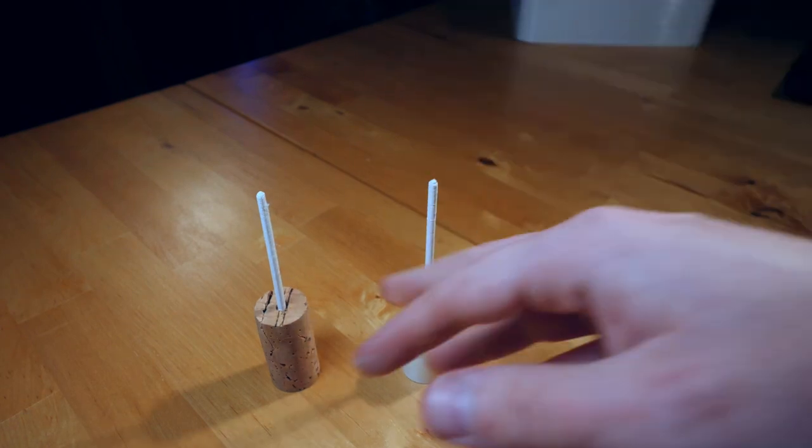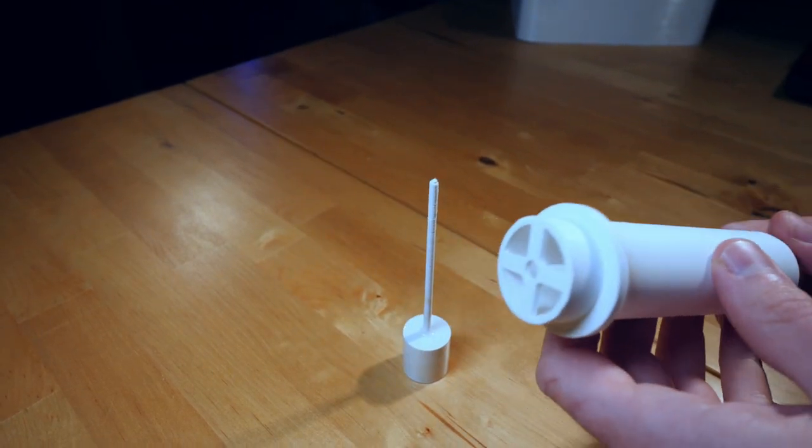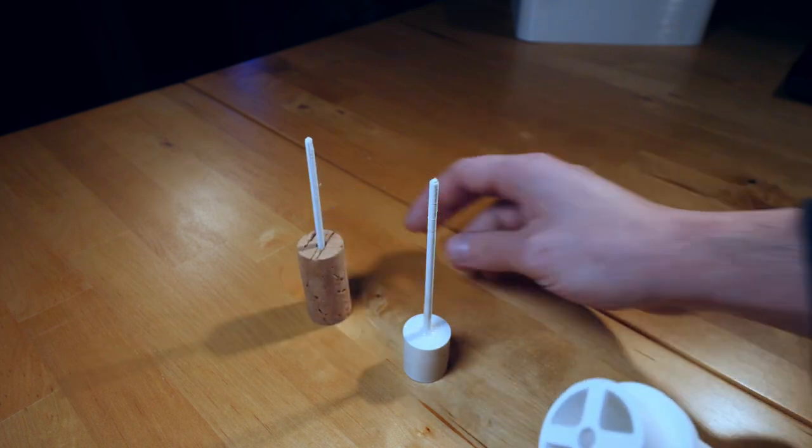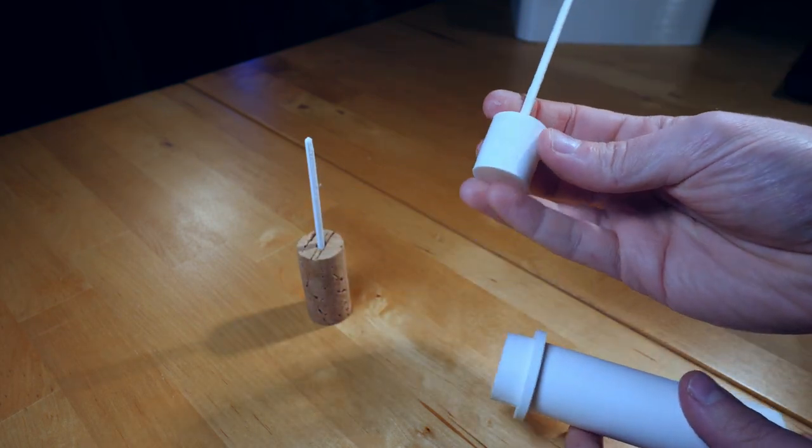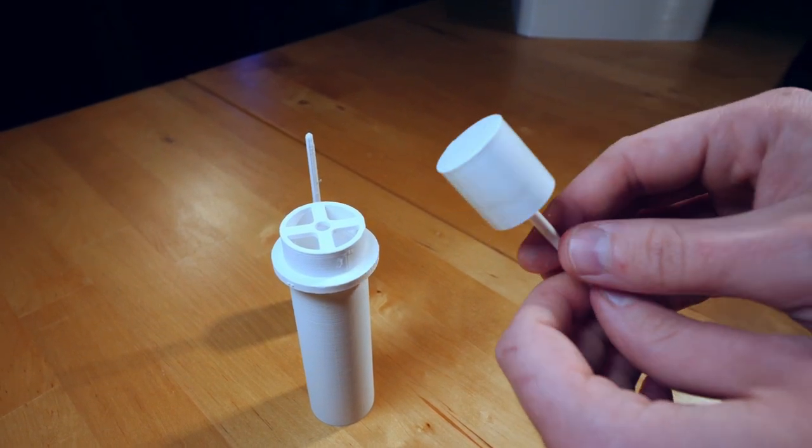I originally wanted to use a wine cork as a swimmer. But it turns out that when the cork gets wet, it sticks to the sides of this tube. So I 3D printed one instead. I also coated this part in epoxy resin so it would be water tight.